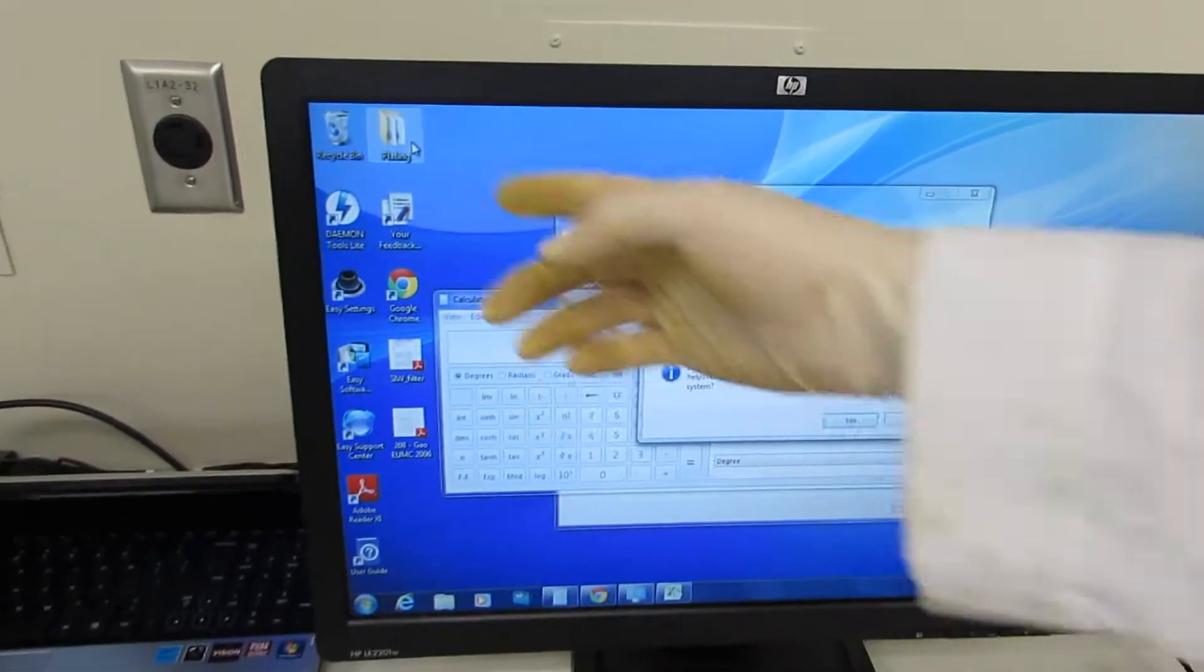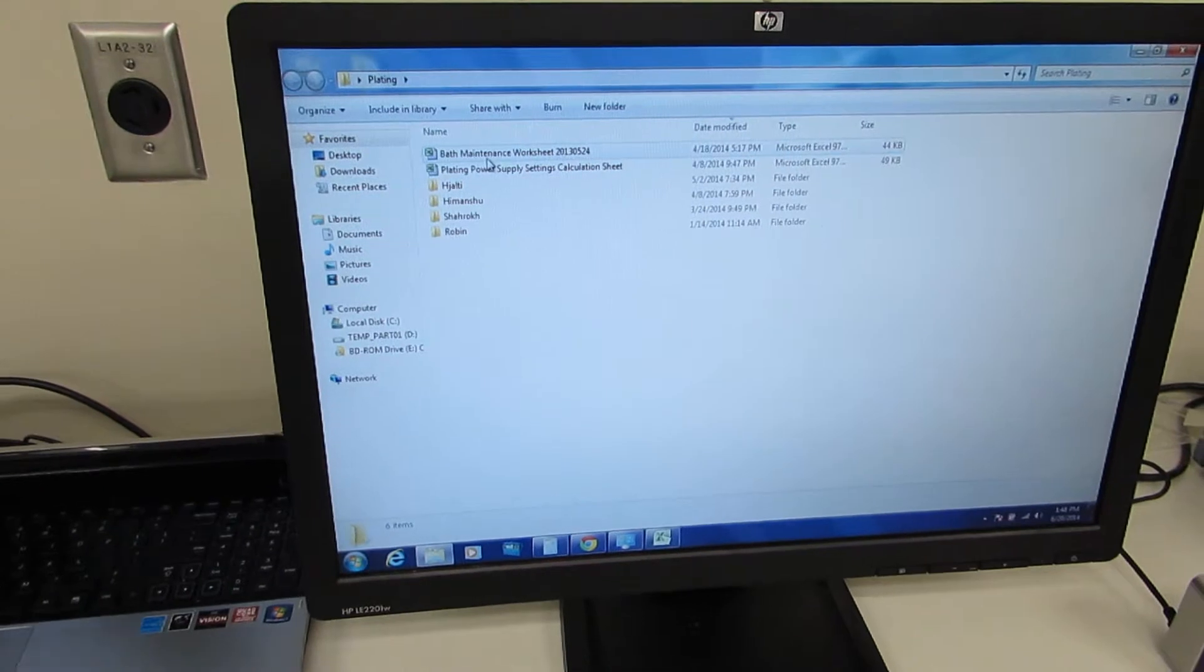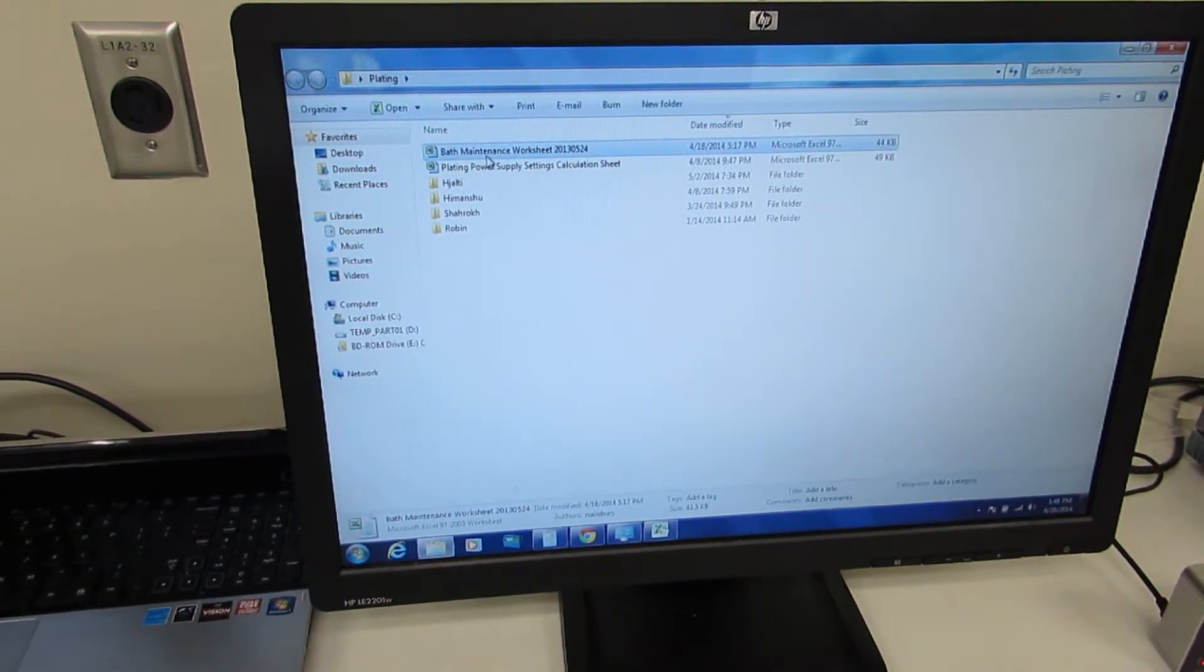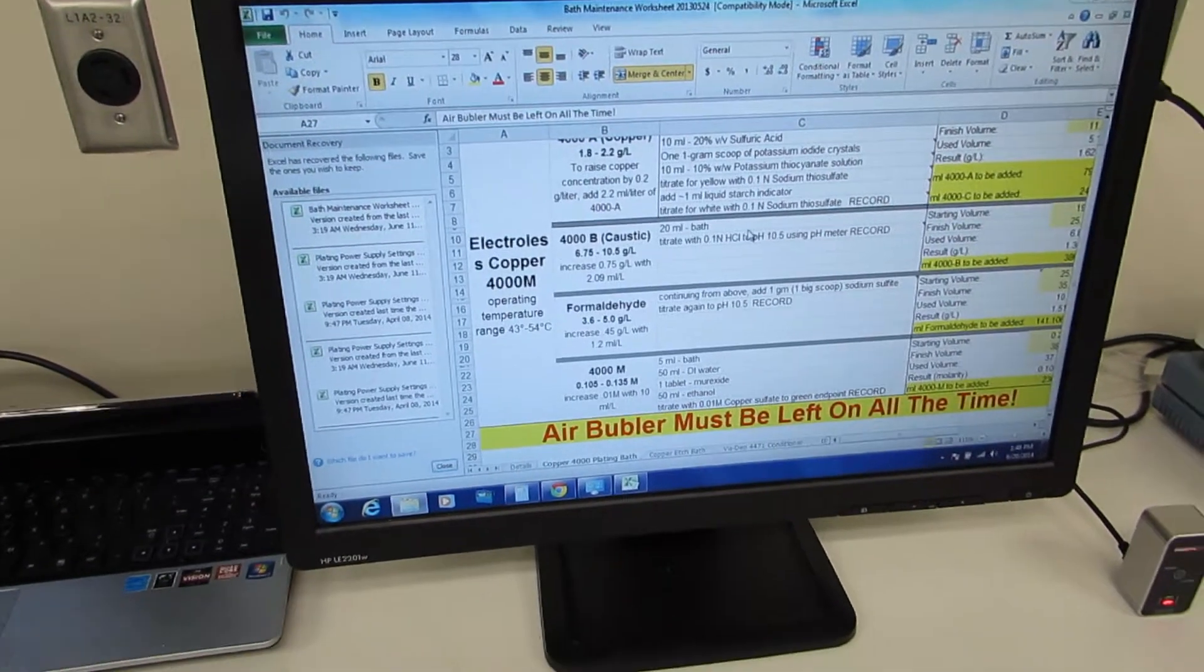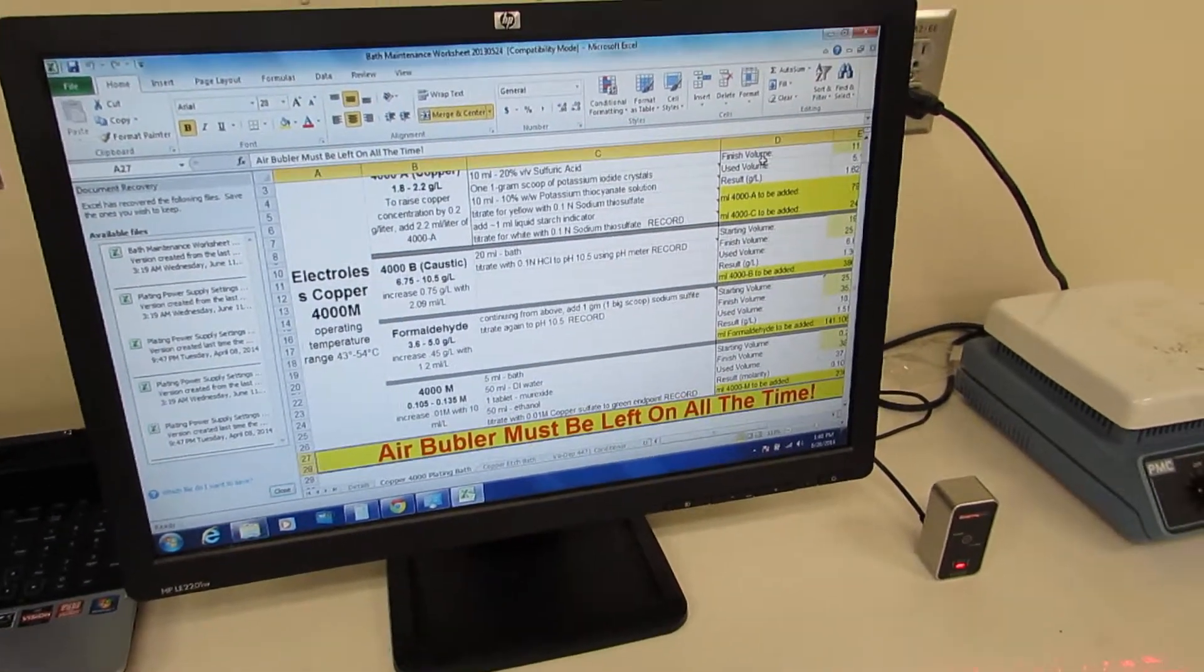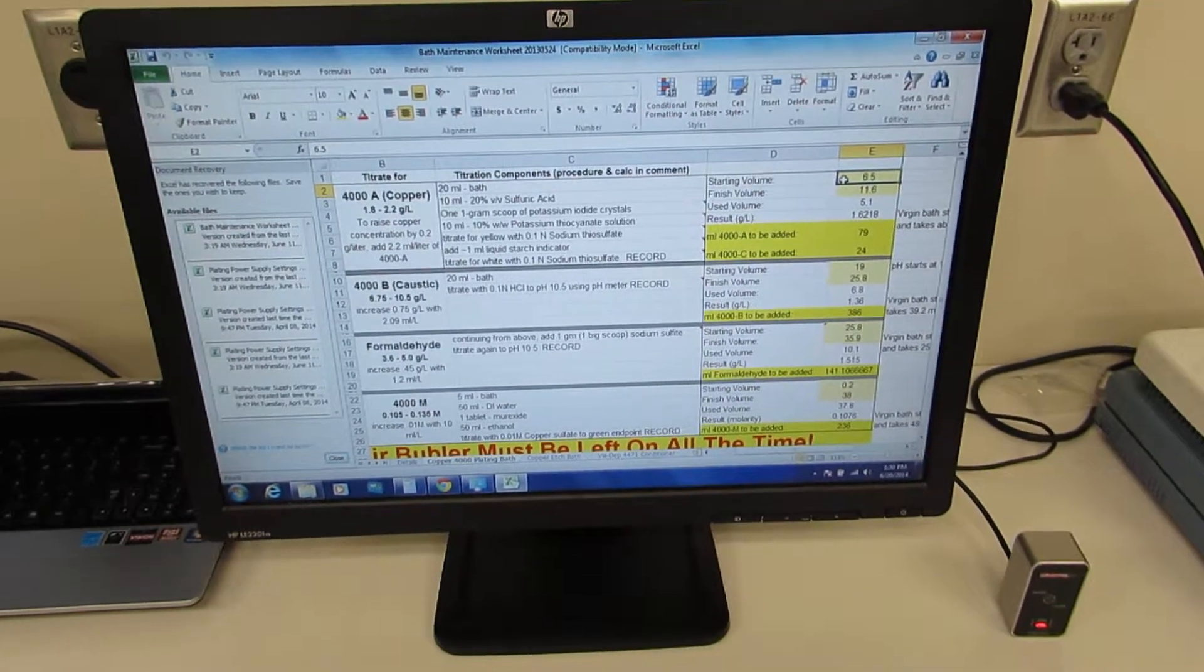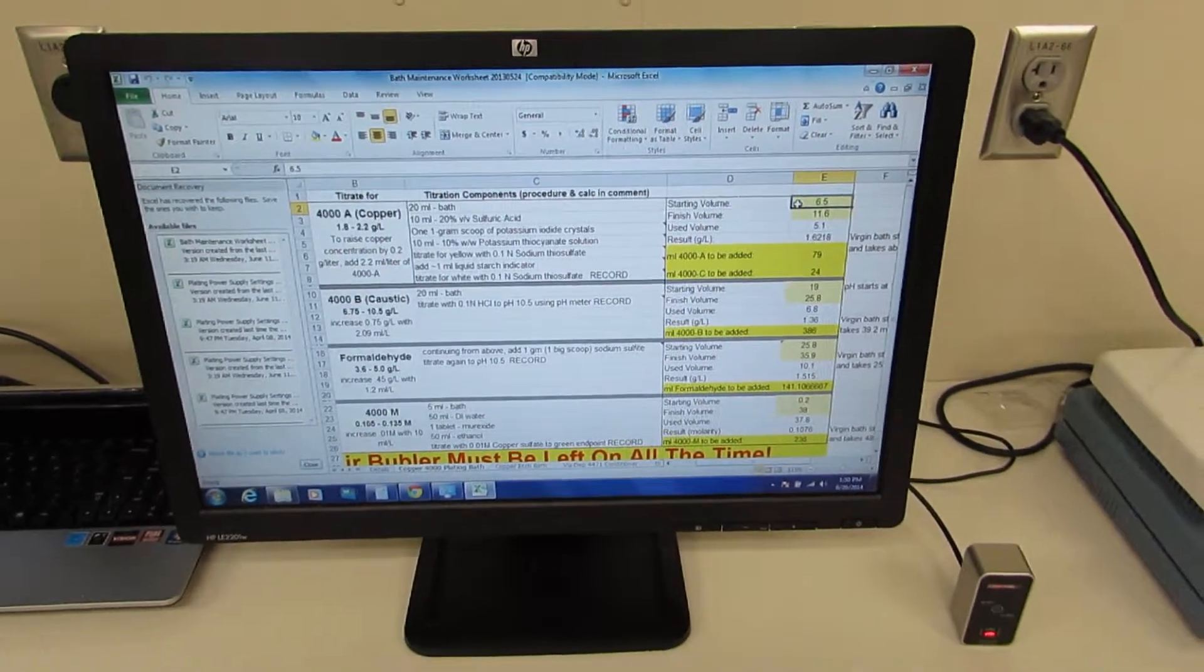To get to our plating document, you go to plating, you open it, bath maintenance worksheet, and it opens to this worksheet. All right, so all the steps are written down in this document, but we are going to show them one by one.